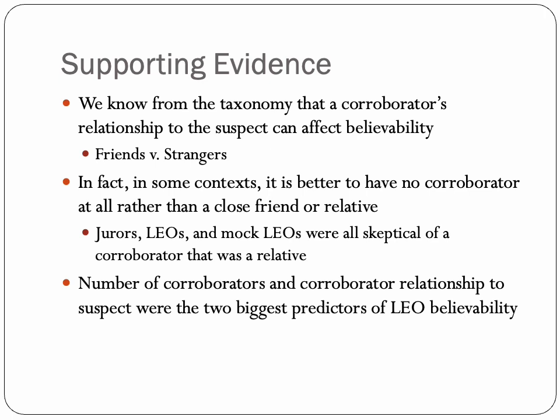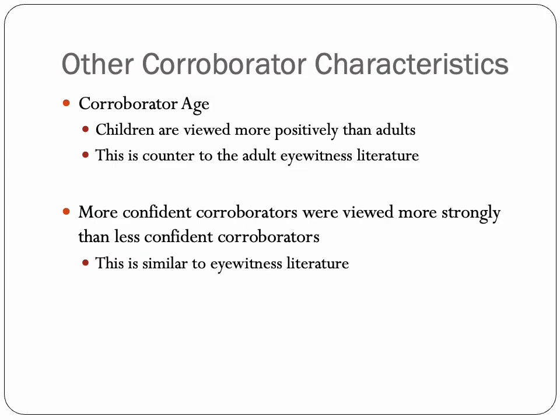The number of corroborators and the corroborator's relationship with the suspect were the two biggest predictors of law enforcement believability, although not absolute predictors. Corroborator age also might matter — children are viewed more positively than adults in this context, because while child eyewitnesses are viewed skeptically, child alibi corroborators are believed to have no real motivation to lie. More confident corroborators were also viewed more strongly, similar to how the confident-accuracy relationship is overestimated in eyewitness research.